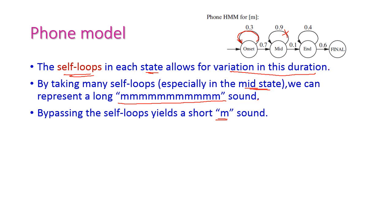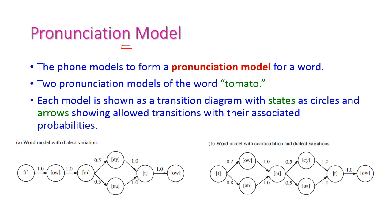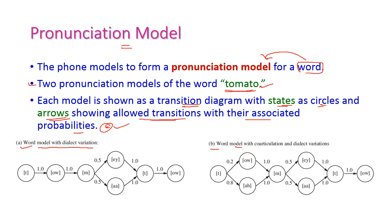The pronunciation model is used to pronounce a particular word. Here two pronunciation models are shown to pronounce the word 'tomato.' These models are explained using a transition diagram where states are represented as circles and arrows represent allowed transitions with their associated probabilities. The first model shows word pronunciation with dialect variation, and the second shows word pronunciation with coarticulation and dialect variation.